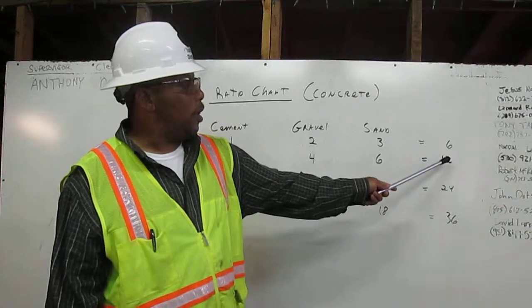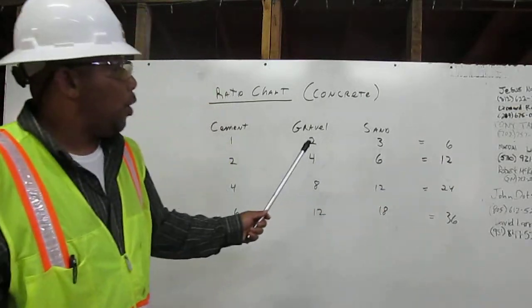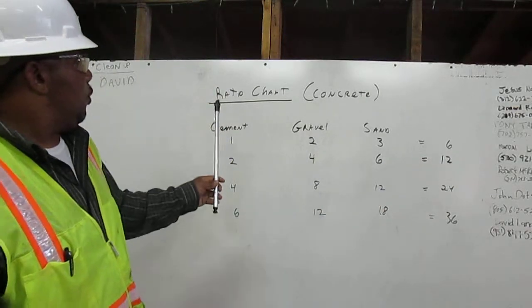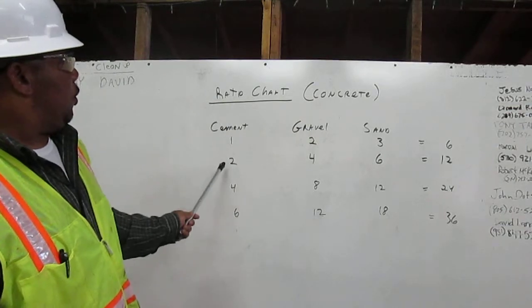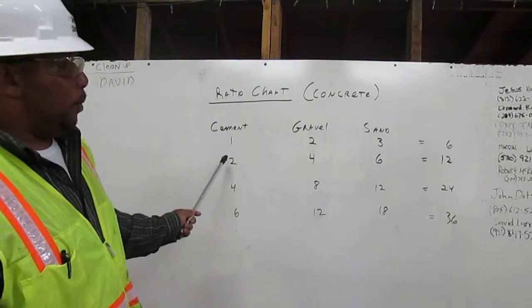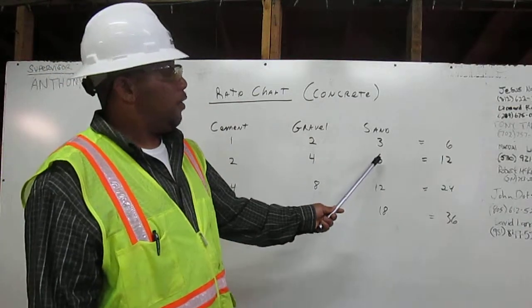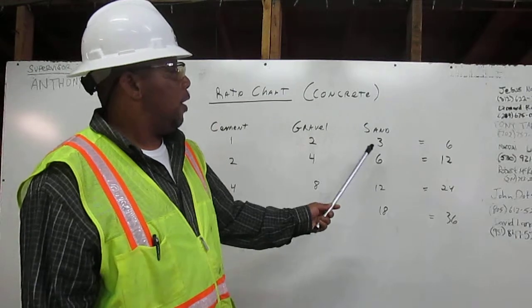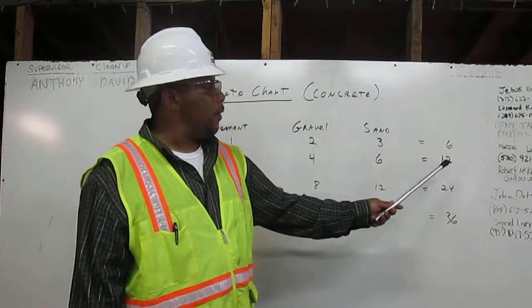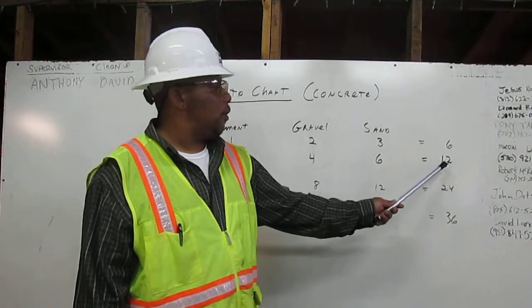Now, to get 12 cubic yards of concrete, we're going to go ahead and double it. We're going to use 2 cubic yards of cement, 4 cubic yards of gravel, and 6 cubic yards of sand. That's going to give us 12 cubic yards of concrete.